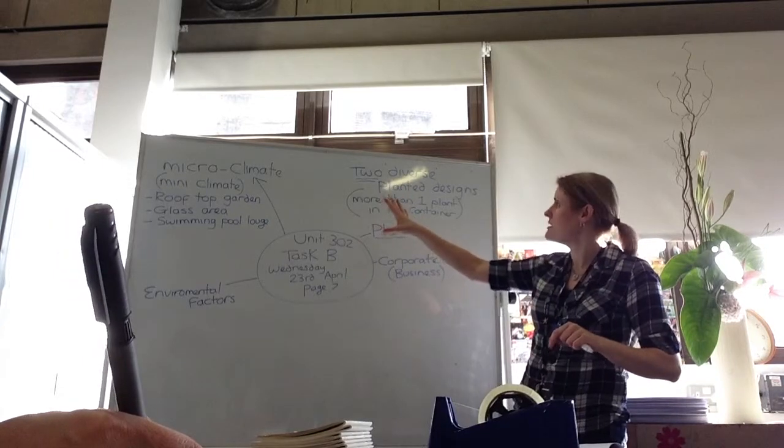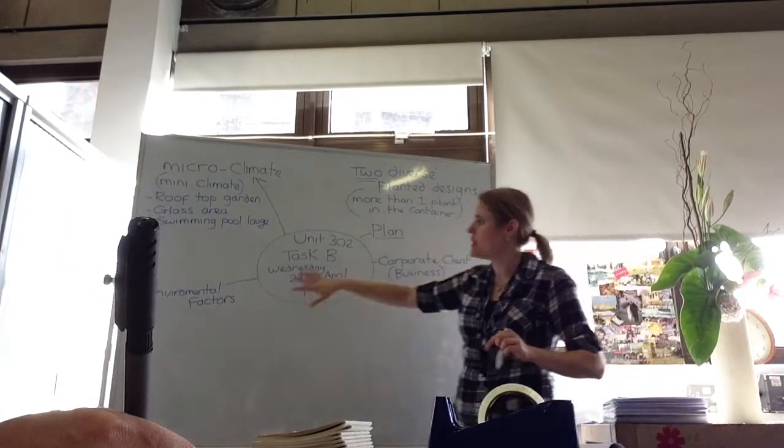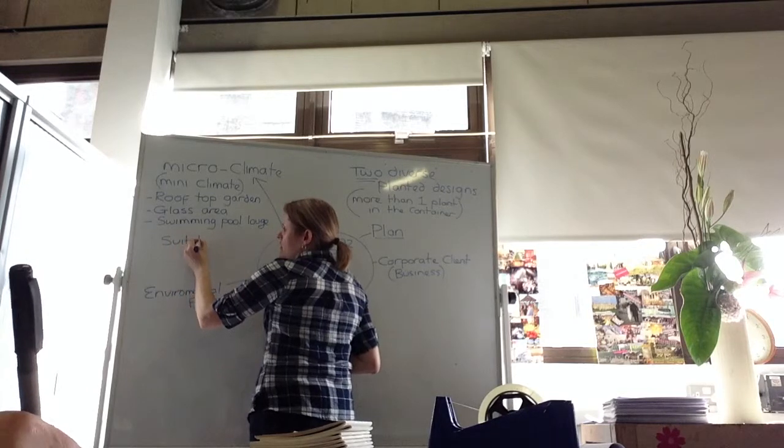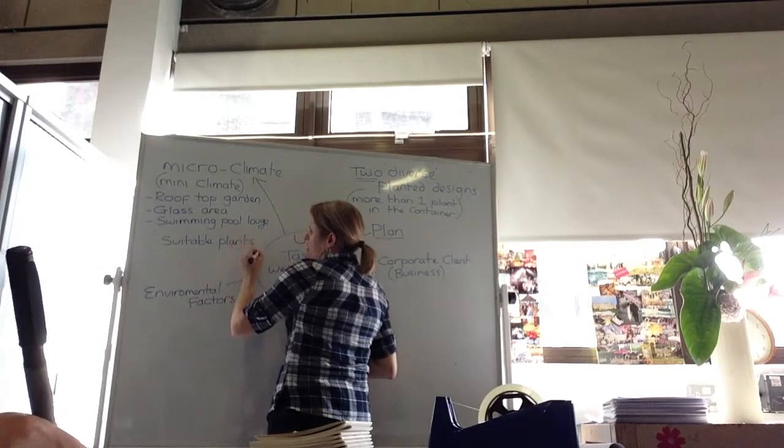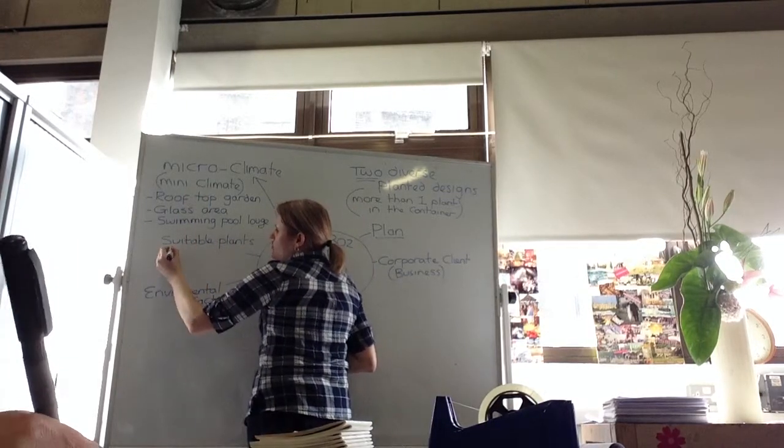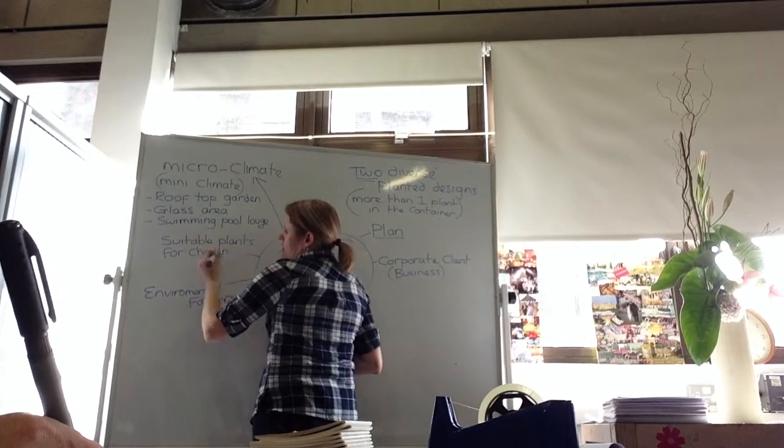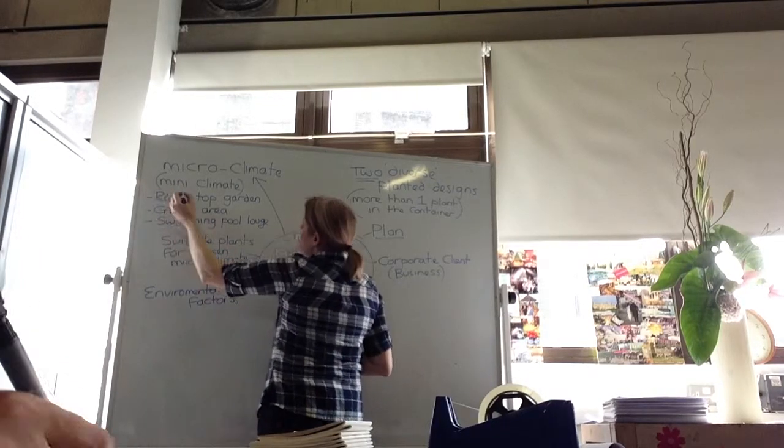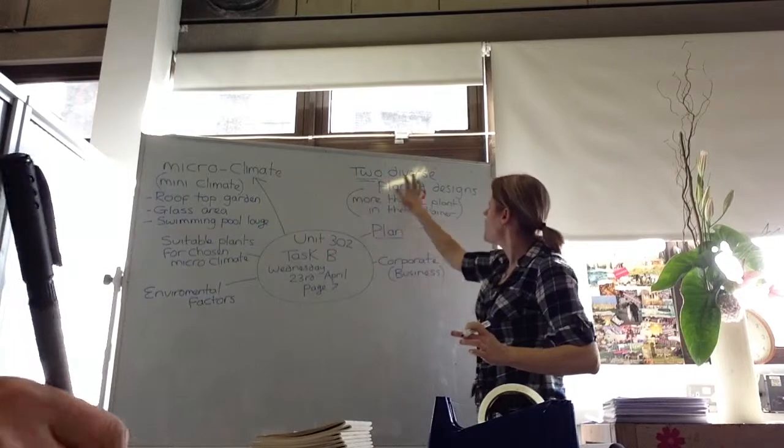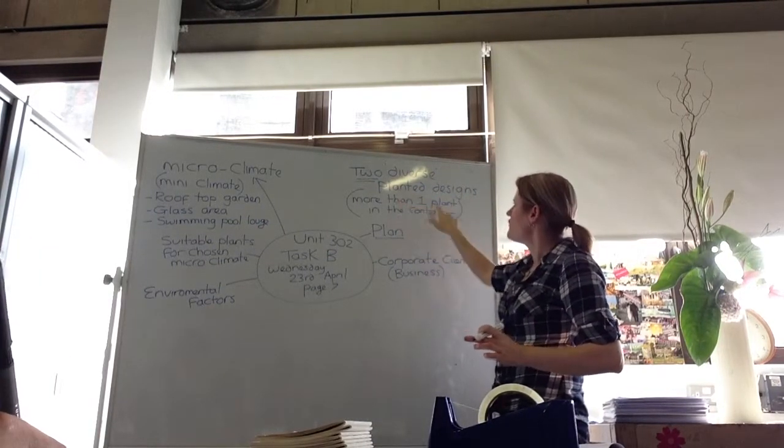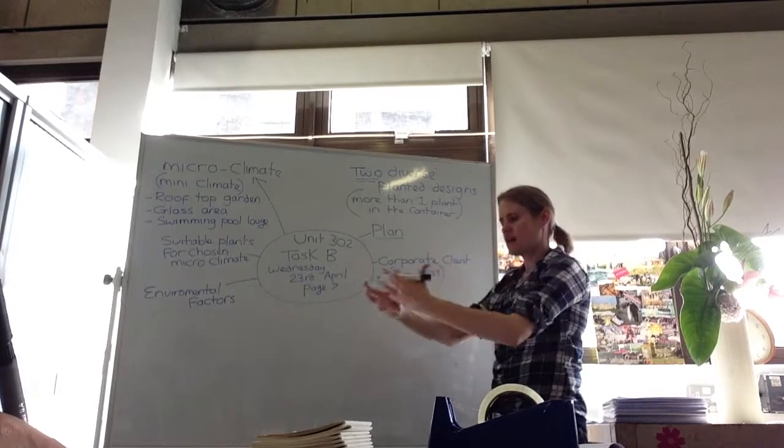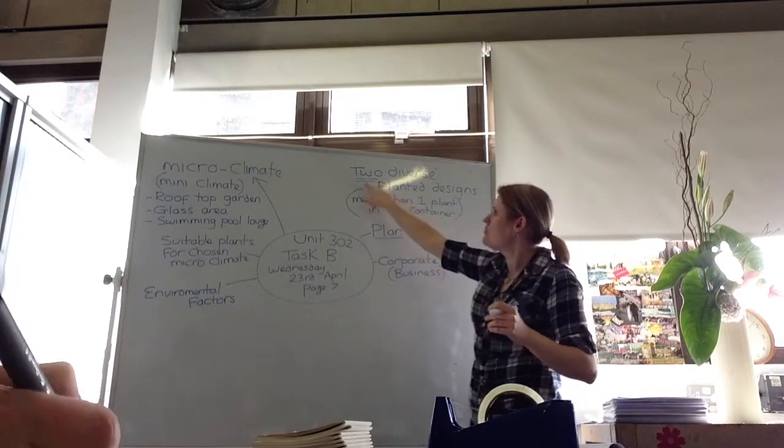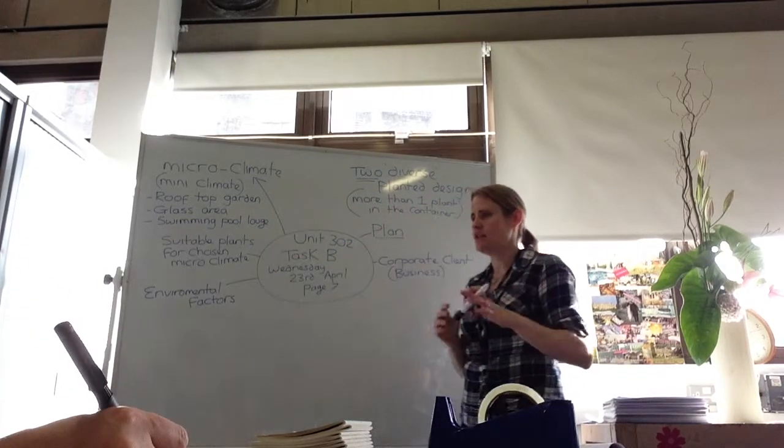So first of all, you need to choose two microclimates. Then from there, you need to choose your plants. Suitable plants. Compatible plants. That suit your suitable plants for chosen microclimates. So that's four plants. It's two different environments. So it's just two different environments, but it's one planted design. And the planted design has to have more than one plant in the container. So you'd have like a selection of plants in a container, rather than actually just one plant in a container. But you only would be expected to do two microclimates. So you'll have two sketches.